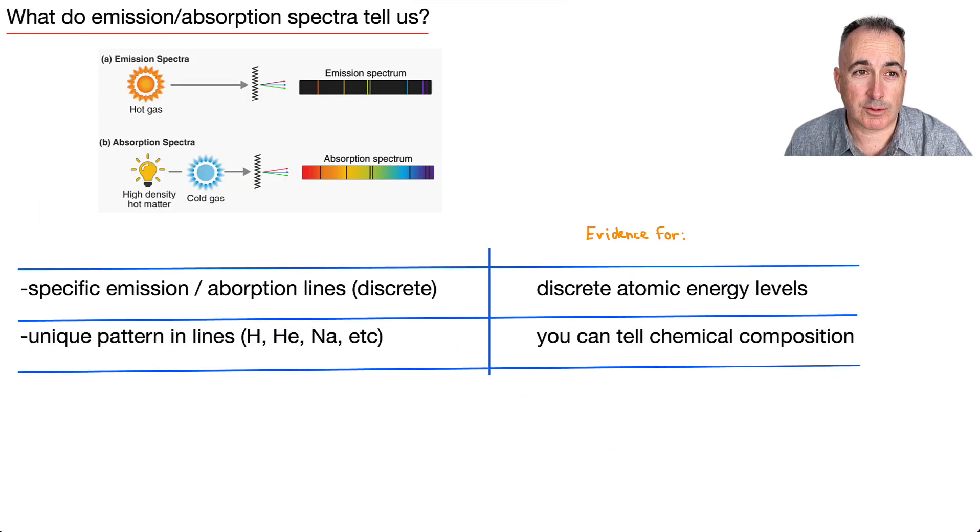So what do these different absorption and emission spectra tell us? And just to remind you, this I think is a nice drawing that kind of shows everything together here. So emission ones, hot gas, for example, it could be the element, could be a gas, could be the star. It just goes through and it just emits at these. Whereas absorption spectra, you've got your hot thing and then you've got your cold gas and you're able to basically tell what the gas is made of because it's been absorbing these different lines. So these specific absorption and emission lines, these discrete ones, that tells you atomic levels must be discrete. That's what it's evidence for. And this unique pattern in lines, for example, hydrogen or helium or sodium or whatever, well, that tells you the chemical composition. So I think it's important to know these two pieces of information here, what these each tell you. This is something you could be asked on an exam.